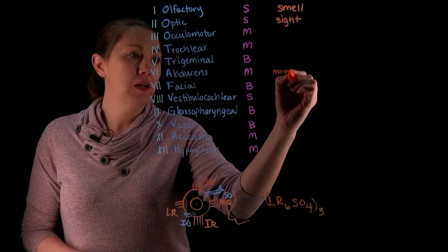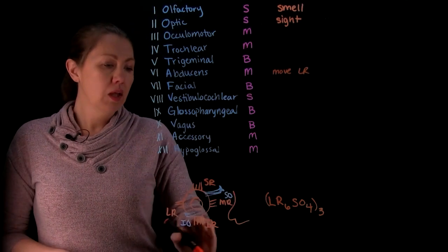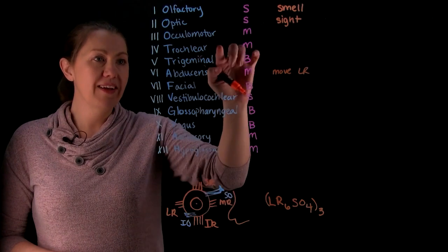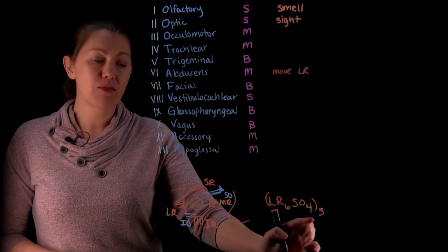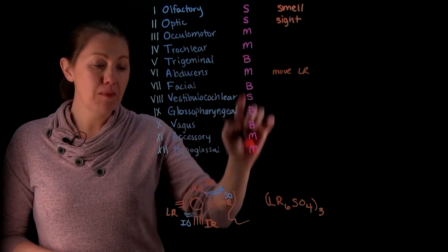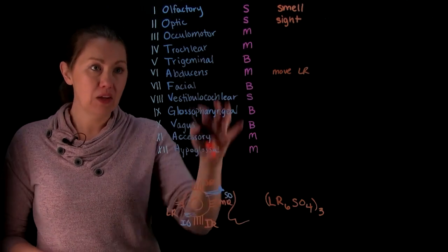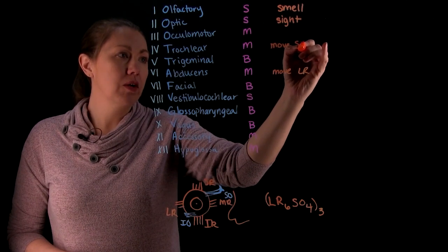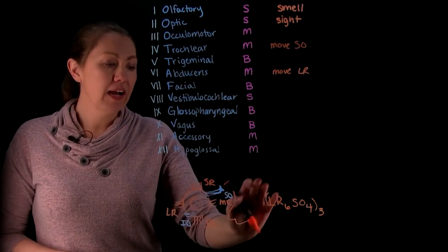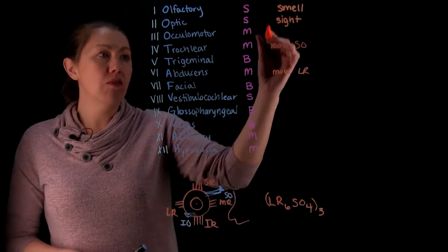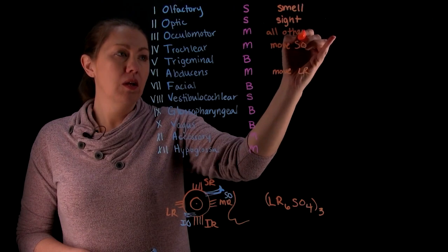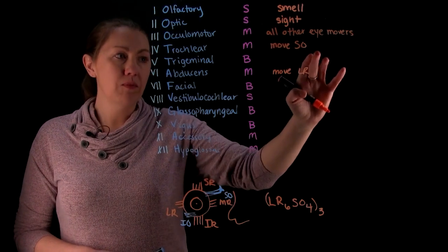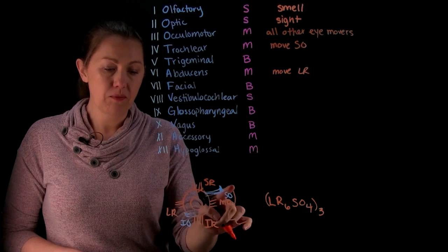So what that means is LR, meaning lateral rectus, is controlled by the sixth cranial nerve, which is abducens. So this deals with moving lateral rectus. The SO4 is for the superior oblique. So the superior oblique is controlled by the fourth cranial nerve. So SO4 is for the fourth cranial nerve, which is going to be your trochlear. And remember we said this is what we're hooking around, is the trochlea. So the name actually helps telling you that it's the muscle it hooks around the trochlea. So this one moves your superior oblique.